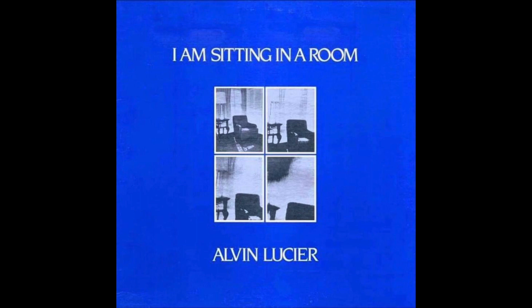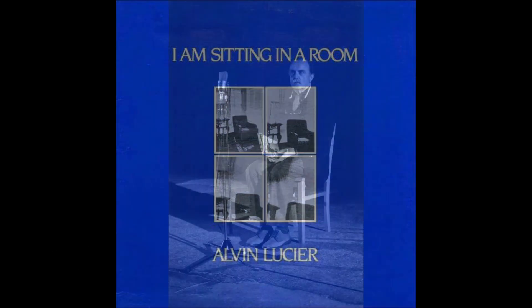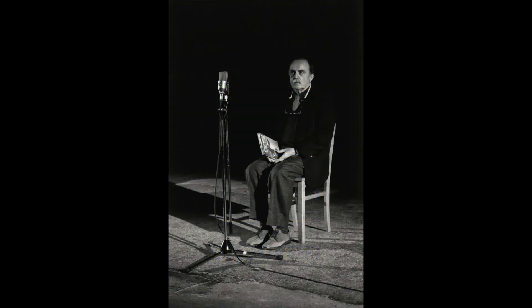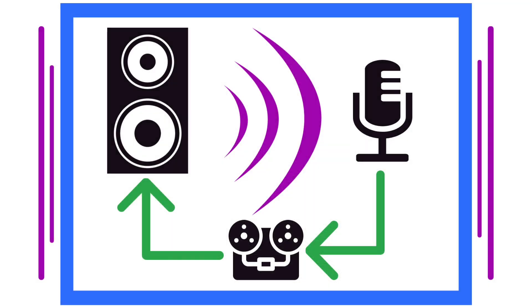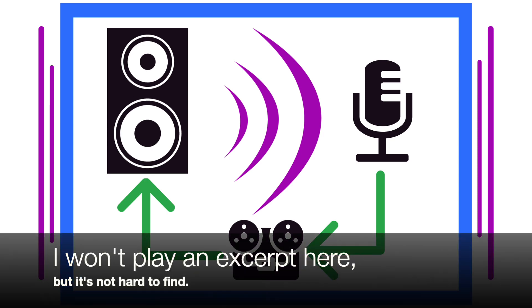One of the greatest examples of the resonance of a space is Alvin Lucier's 'I Am Sitting in a Room,' where he records himself speaking in a room, plays back that recording and re-records it, plays back that recording and re-records it, until the details of his speech disappear and we're just left with his voice activating the resonances of the space that he's in.